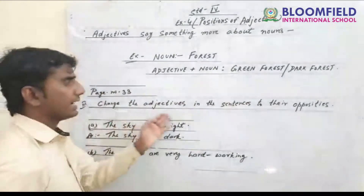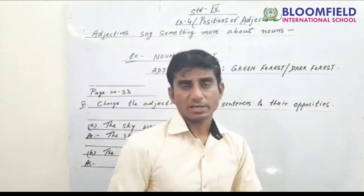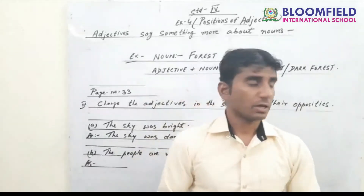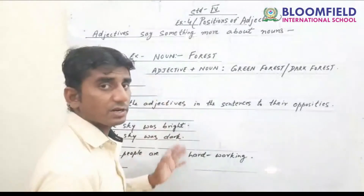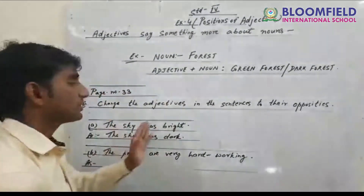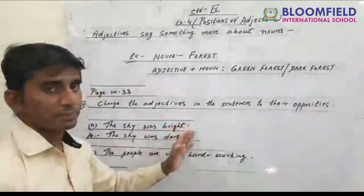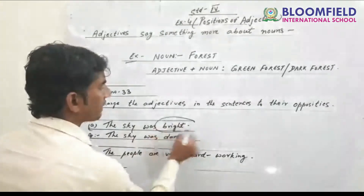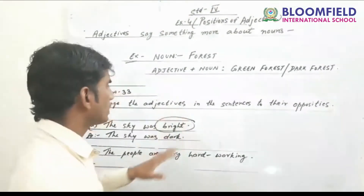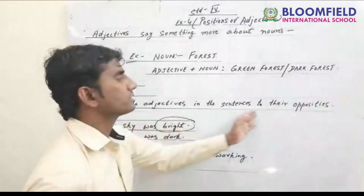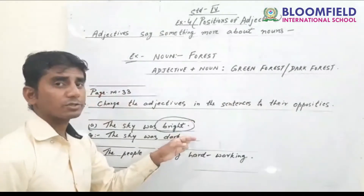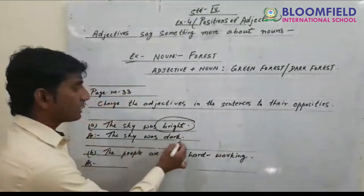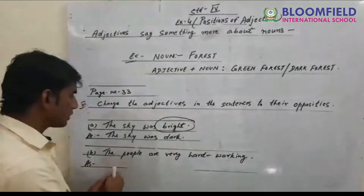On page 33, the exercise asks you to change the adjective in the sentences to their opposites. First, you must find where the adjective is in the sentence. For example: 'The sky was bright.' The adjective is 'bright.' To find the opposite, bright becomes dark. So the answer is: the sky was dark.